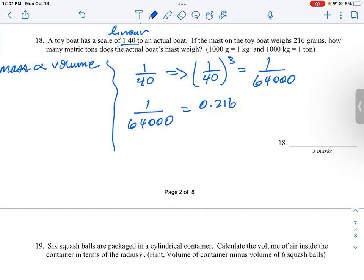convert that to kilograms because it's going to be a very large number. So 0.216 kilograms is equal to over x, so x is going to be how many kilograms the real mast is.